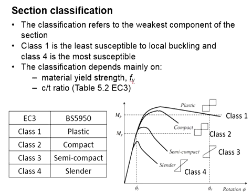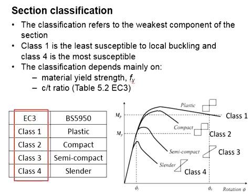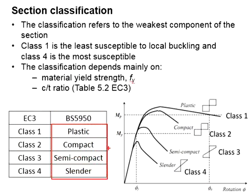The weakest component will govern the strength and capacity of the member. Class one is least susceptible to local buckling while class four is the most susceptible. However, it doesn't mean that class one will never encounter local buckling — it is always good practice to check the local buckling of the member. To determine the classifications, you need the yield strength of the material and the width-to-thickness ratio. The classification given by Eurocode is in line with BS 5950, only that they term it differently as plastic, compact, semi-compact, and slender, but they refer to the same working principle.